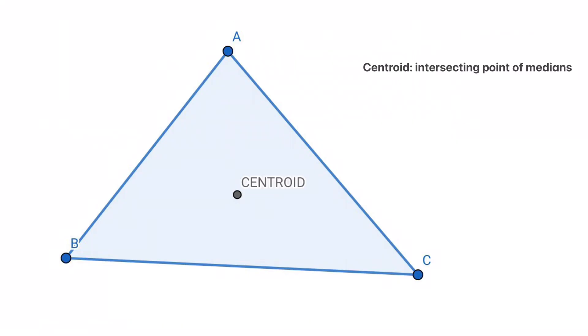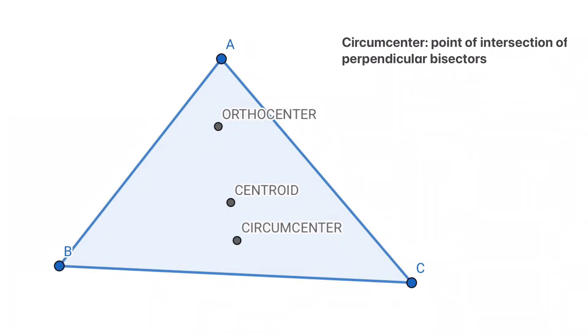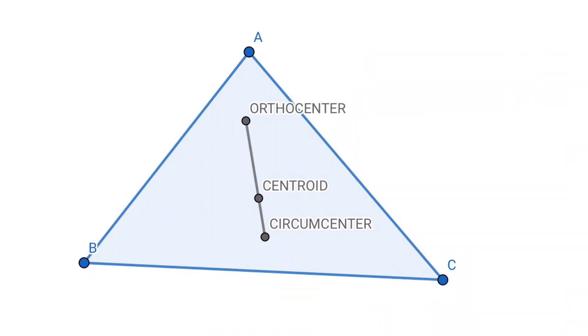Let's draw the centroid, which is the intersecting point of medians. Then, let's draw the orthocenter, which is the point of intersection of the perpendiculars of all three sides. Now let's draw the circumcenter, which is the intersection point of perpendicular bisectors of all three sides.